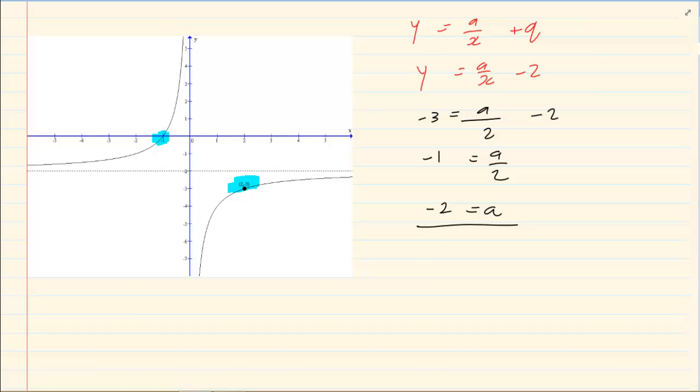You need to rewrite your equation. So we'd have y equals, my a is -2 over x, and my q is -2. So my final equation is y = -2/(x - 2).